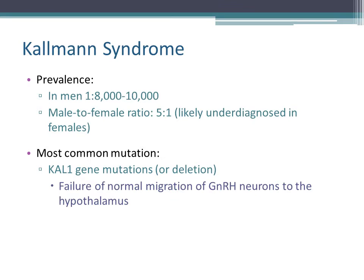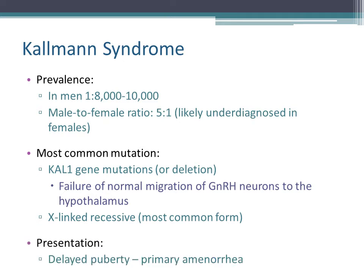The KAL1 mutation leads to failure of normal migration of GnRH neurons to the hypothalamus. It is X-linked recessive, which is the most common form, though there are other modes of inheritance as well. They typically present with delayed puberty in males or primary amenorrhea in females.